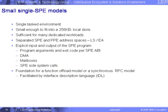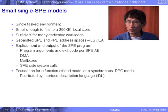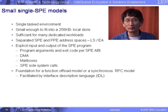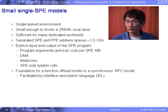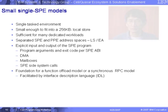For single SPE programs, we have a small programming model and a large programming model. The small single SPE model — we refer to as a single task environment — is small enough to fit into 256 KB of local store, sufficient for many dedicated workloads. How sufficient is it? What is the size of a program that can run on the local store in that 256 KB? How many lines of code do you think will run?